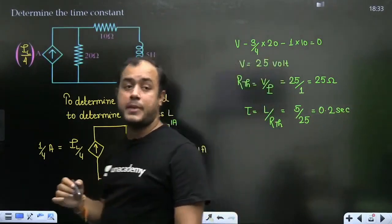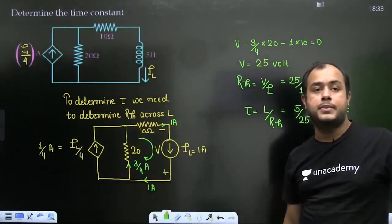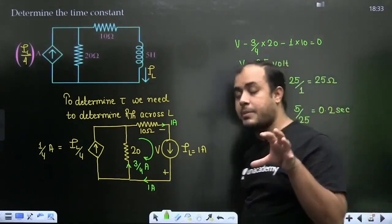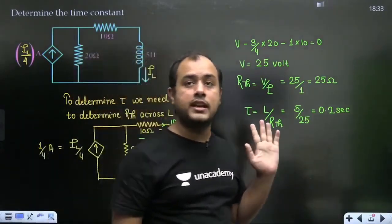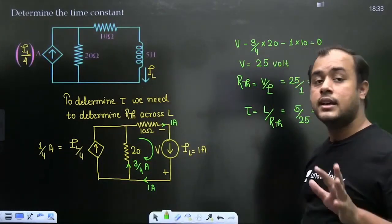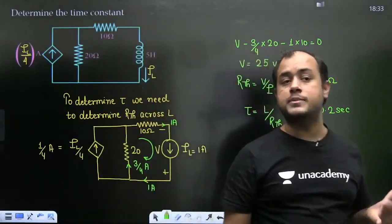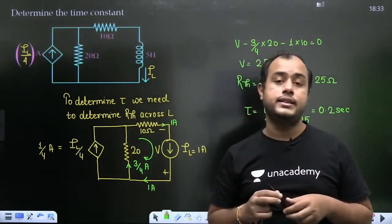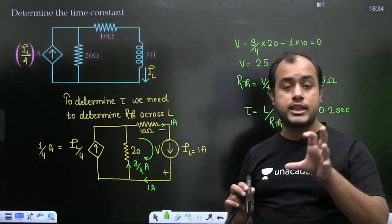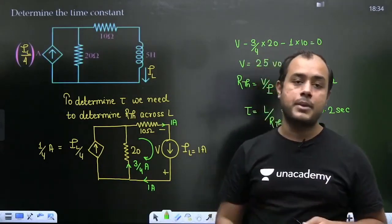Maine aapko tau ki practice isliye karayi hai taaki aapko tau nikalne mein command ban jaye — jaise humne initial aur final condition ki alag se practice ki thi. Ab main maanta hoon ki aapke paas saare woh hathiyaar ready hain jo transient ke questions ko kill karne ke liye chahiye. Transient ke questions yun hi khatam ho jayenge. Badi problem dekhke darein mat — hamesha choti-choti problems solve karte jao.